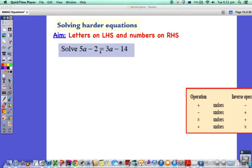Let's look at the 3a. What is the opposite to 3a? The opposite to positive 3a is minus 3a. We're going to have 5a minus 2. To get rid of it on this side we have to subtract it. So minus 3a equals 3a minus 14 minus 3a.